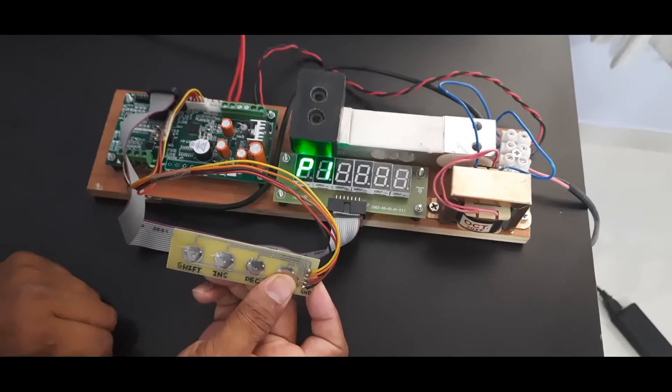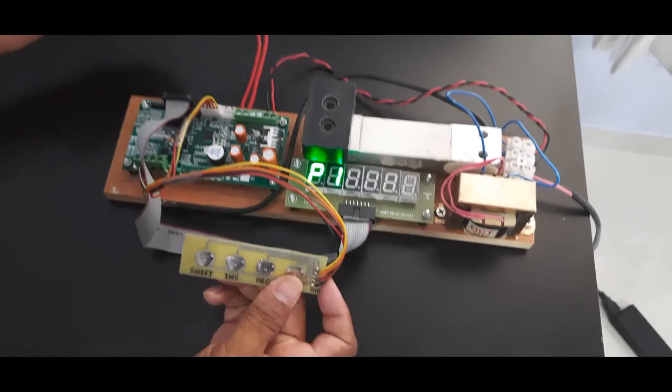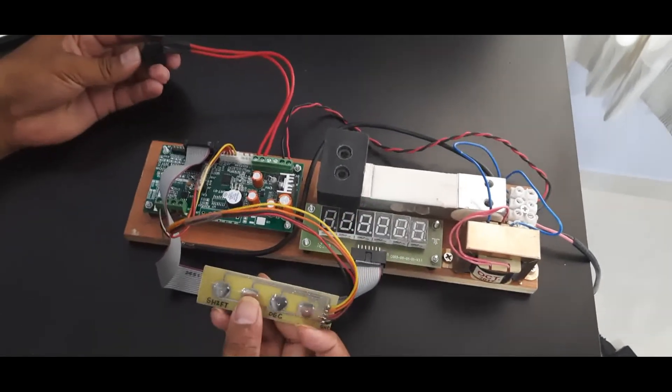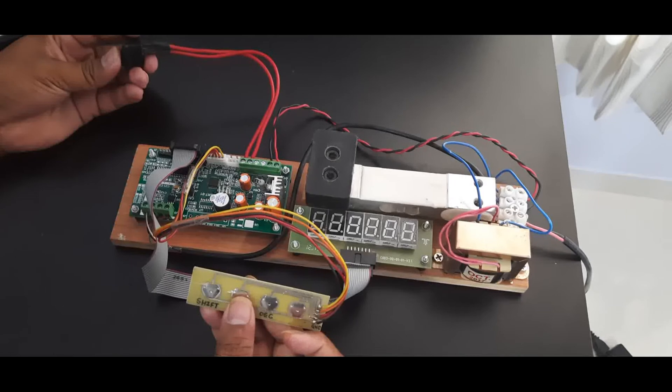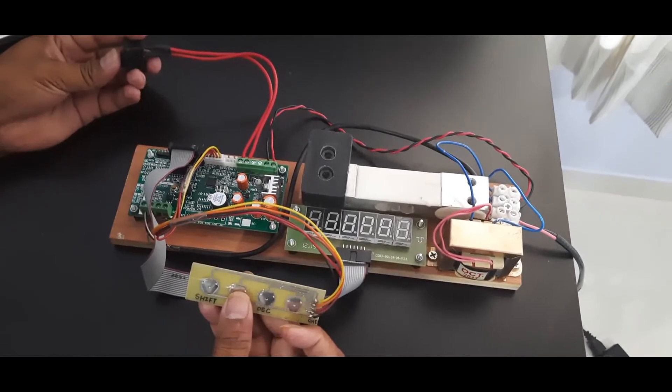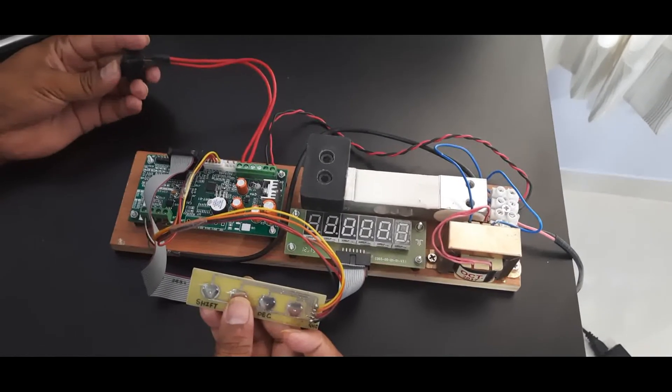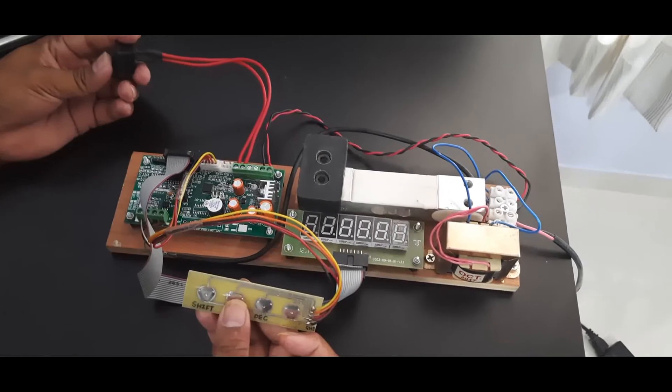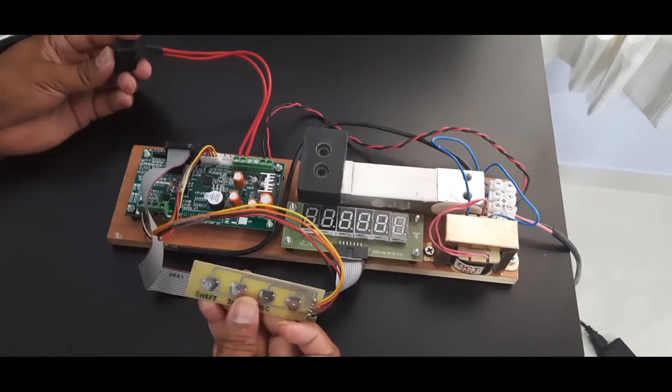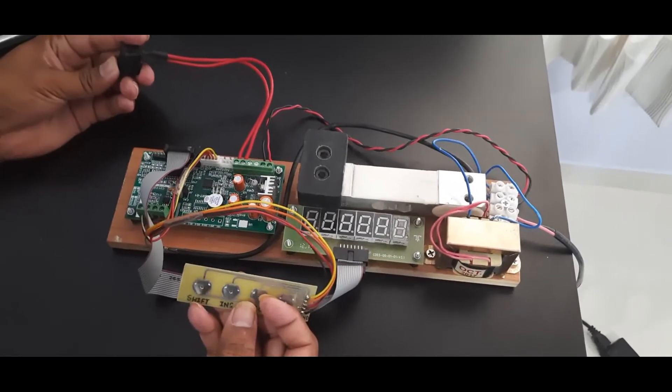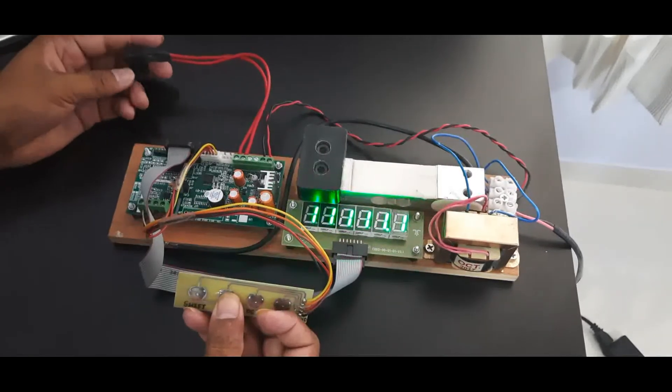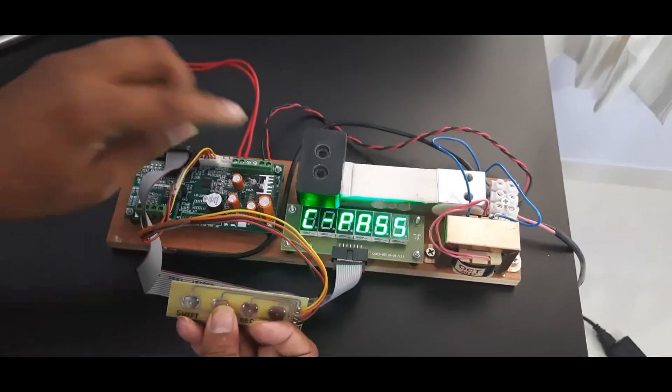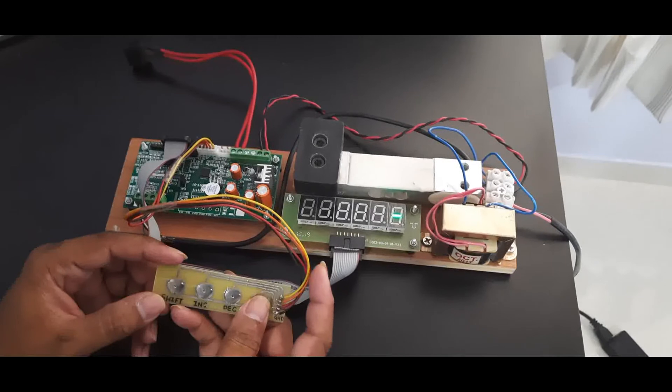For external calibration, the password is by default 2222, that is four times two. I will turn off and turn on again, and I will press the increment key. It will ask for the calibration password.